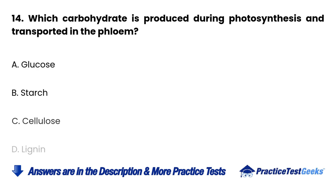Question 14: Which carbohydrate is produced during photosynthesis and transported in the phloem? a. Glucose. b. Starch. c. Cellulose. d. Lignin.